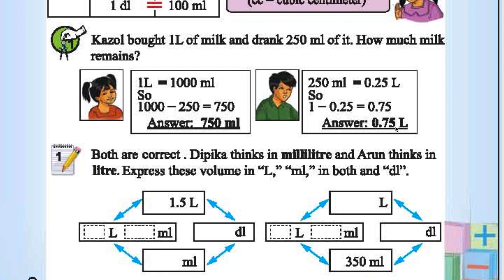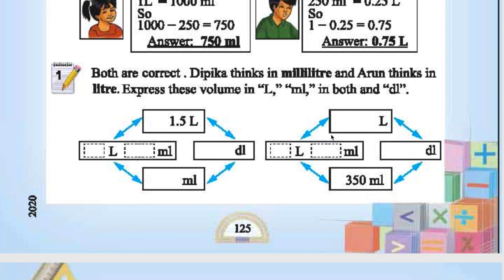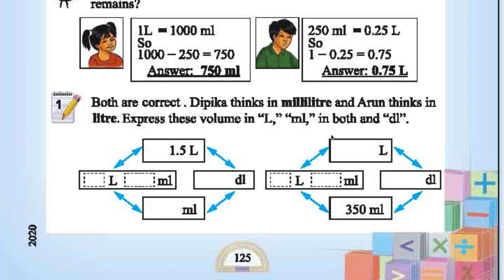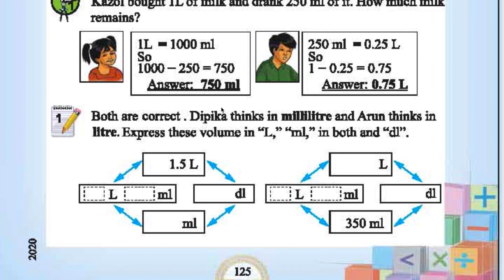In liters it is 0.75 liter, 750 by 1000 equals 0.75 liter. Deepika thinks in milliliter and Arun thinks in liter. Both answers are correct.